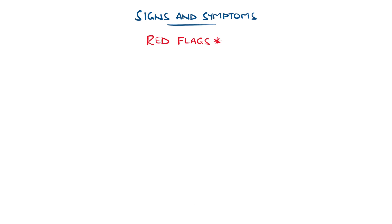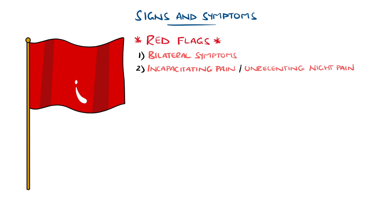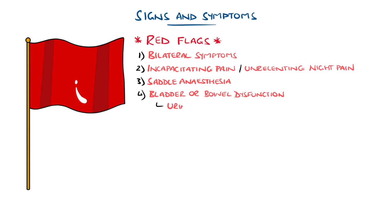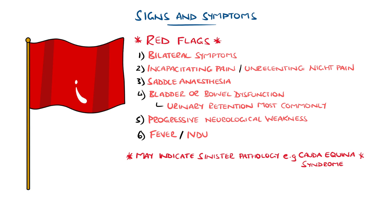Red flag symptoms that suggest an alternative diagnosis or need for urgent intervention include bilateral nerve involvement, incapacitating pain or night pain that does not settle, saddle anaesthesia — meaning a lack of sensation in the region of the perineum — and any bladder or bowel dysfunction, the most common being urinary retention. Progressive neurological weakness, use of intravenous drugs, fever, or steroids are also considered red flags. These symptoms could indicate cauda equina syndrome, where there is compression of the tail end of the spinal cord, or could indicate a spinal fracture or even malignancy, and factors like intravenous drug use predispose to infections and abscess formation.